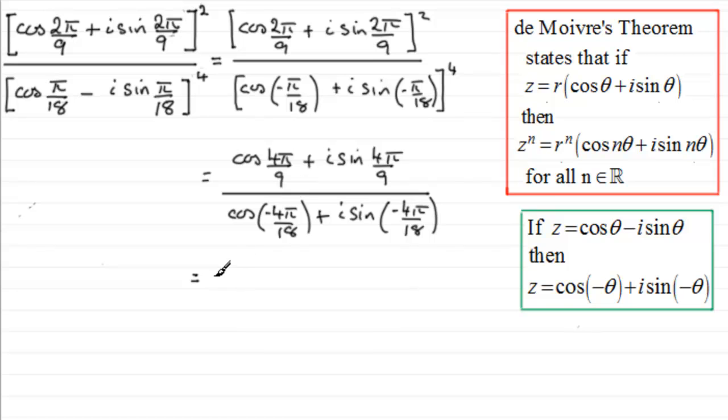So this is going to be the cosine of 4π over 9, our top angle here, and then we subtract the angle on the bottom. So we've got a minus minus 4π over 18. And then we've got plus i sine, and again it's the same thing, 4π over 9 subtract minus 4π over 18.